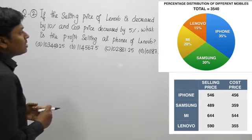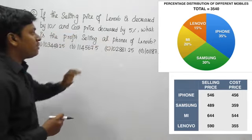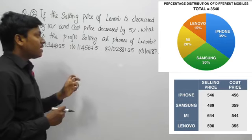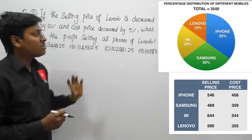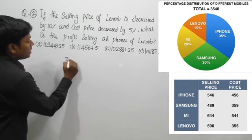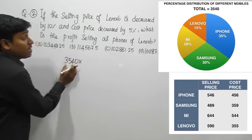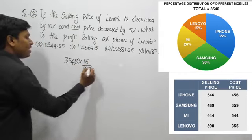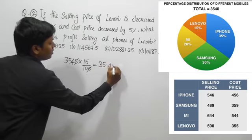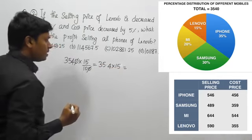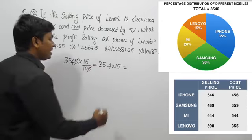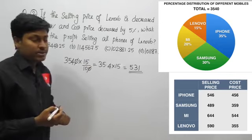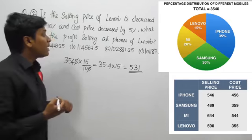Question number two: the selling price of Lenovo is decreased by 10 percentage and the cost price is decreased by 5 percentage. Find the profit earned by selling all phones of Lenovo. Out of 3540 total mobiles, Lenovo is 15 percentage. So 3540 × 15/100 = 531. Total Lenovo mobiles are 531.